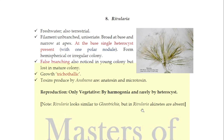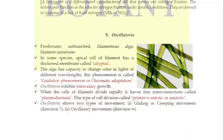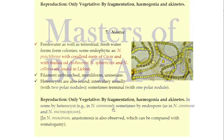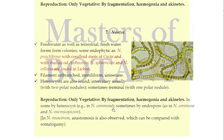One special comparison: Rivularia and Gliotrichia — as I told you in the last lecture — look similar. In Gliotrichia, the terminal end has heterocysts, while in Rivularia the terminal heterocyst is at the base. Akinetes are present in Gliotrichia but absent in Rivularia. These are the distinguishing features visible under the microscope. That covers these 4 members, and I will talk about Cytonema in the next video.